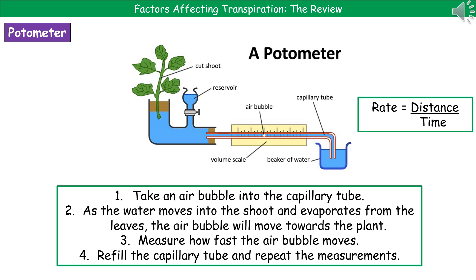We use a piece of equipment called a potometer, which you can see in the diagram there. In that capillary tube, you can see there's a little air bubble. As the plant takes up more water, the air bubble is going to move, and because there's a scale behind it, we can work out exactly how far it moves.